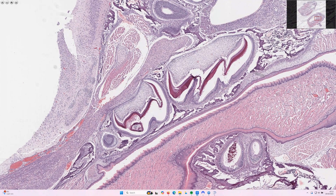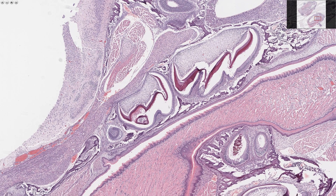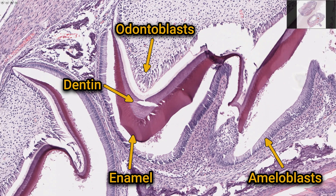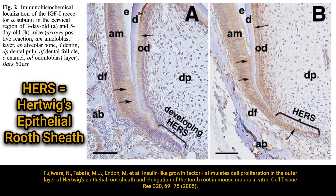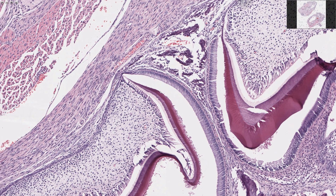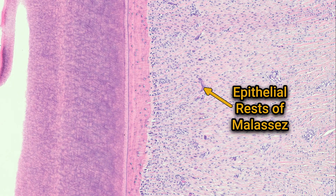In this mouse fetus we can see some teeth that are further along in development. You can see the ameloblasts producing enamel, a layer of dentin, and then the odontoblasts underneath. Once the crown is complete, the edge of the enamel organ continues to grow down, forming the epithelial sheath of Hertwig. This sheath maps out the shape of the root by inducing odontoblasts to form the root dentin. After its job is done, this sheath breaks down, but small clusters of its cells can remain in the periodontal ligament for life. These are known as the epithelial rests of Malassez.